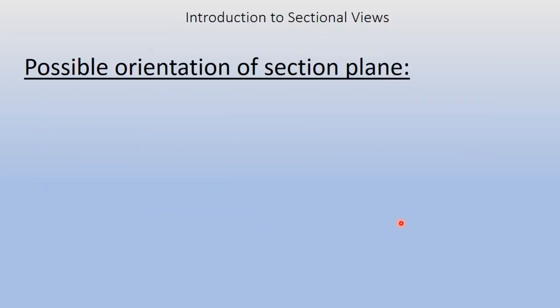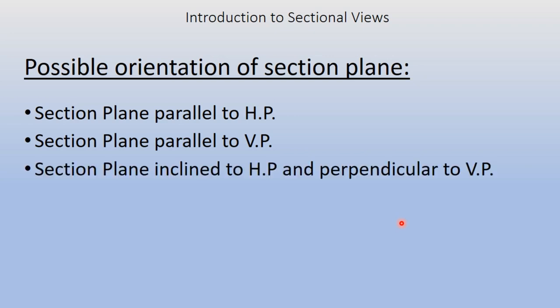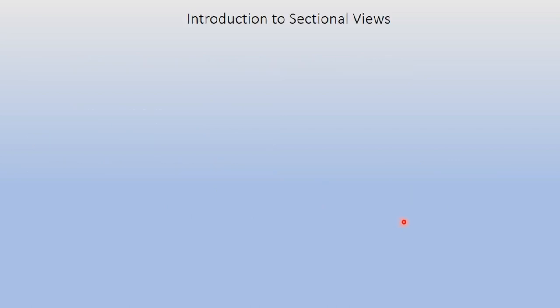The possible orientations of the section plane are as follows: section plane parallel to HP, section plane parallel to VP, section plane inclined to VP and perpendicular to VP, and section plane inclined to both HP and VP. In the next part of this video lecture I am going to show you the section plane with reference to HP, and while solving exercises we will see all these cases one by one.